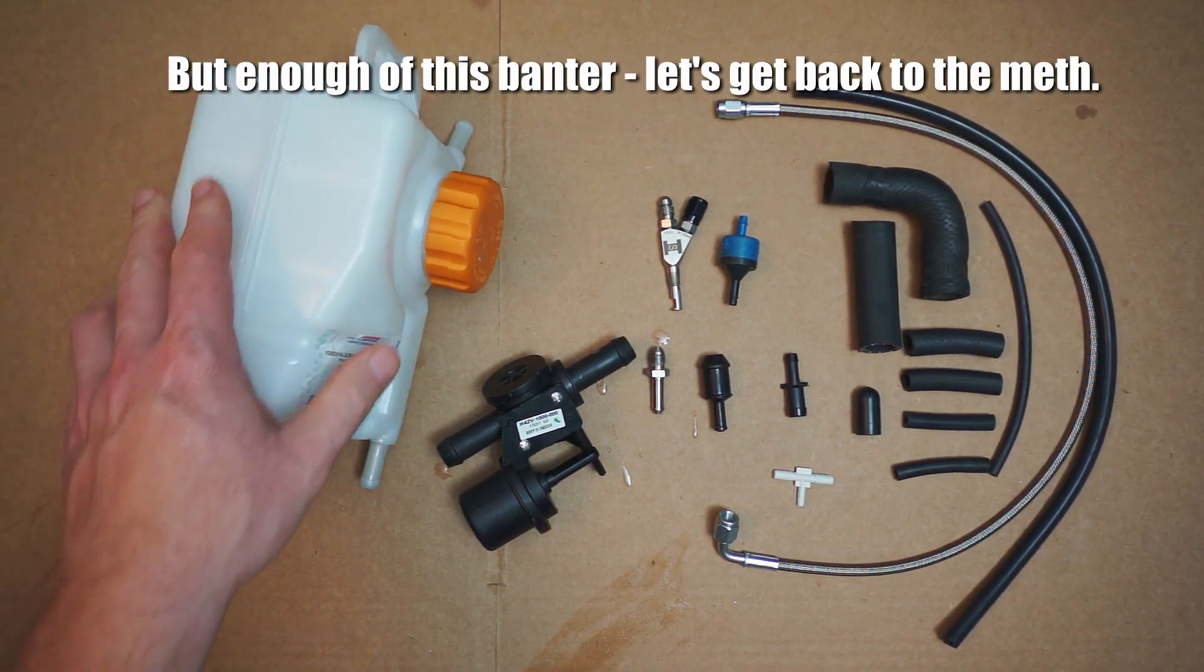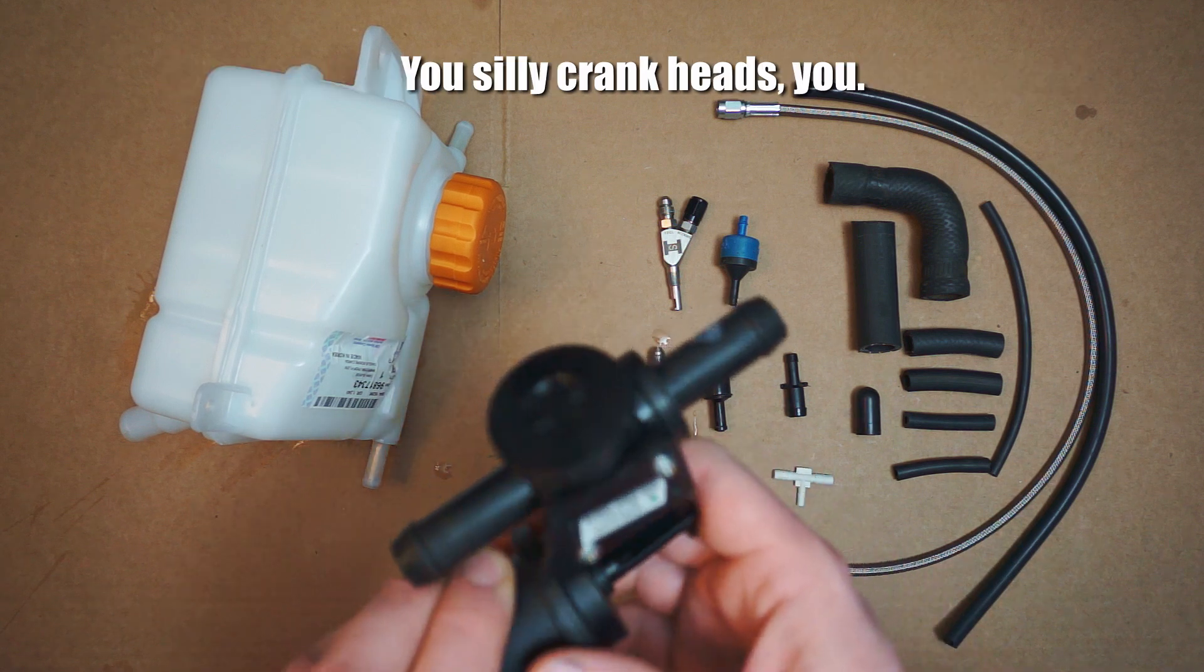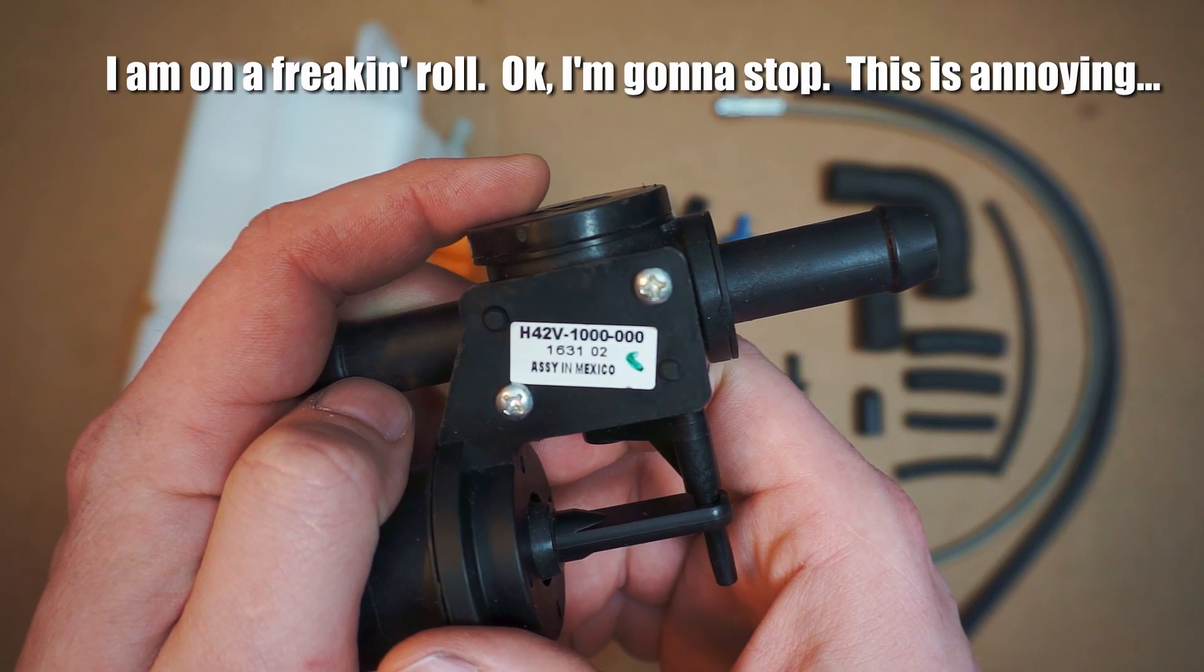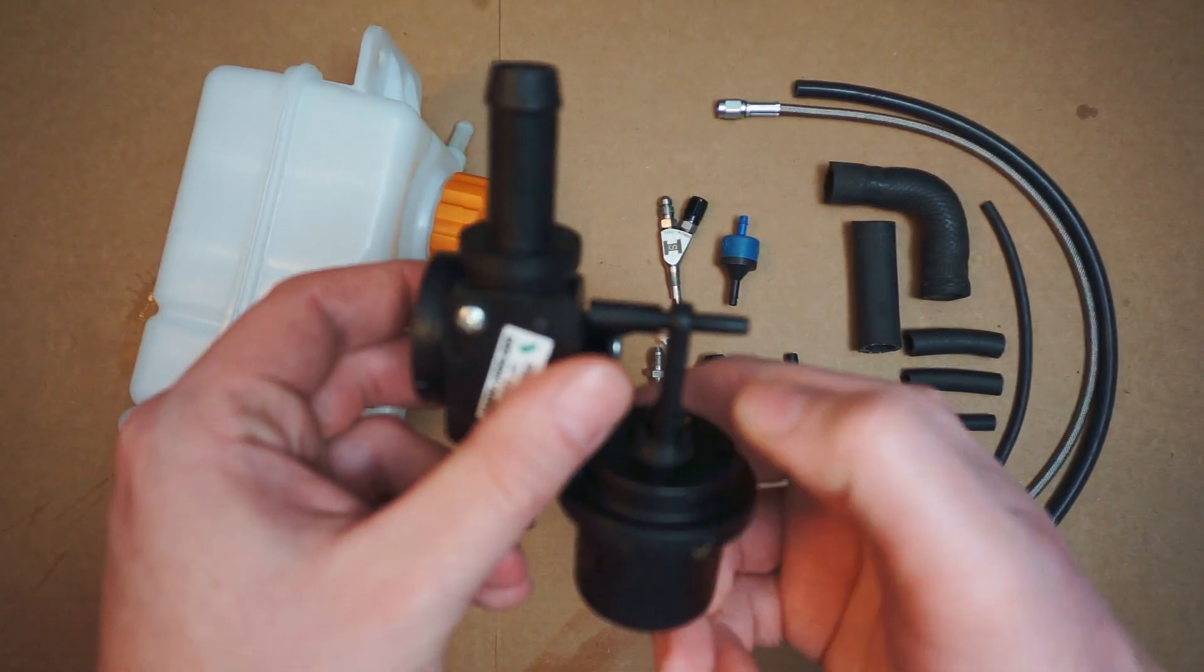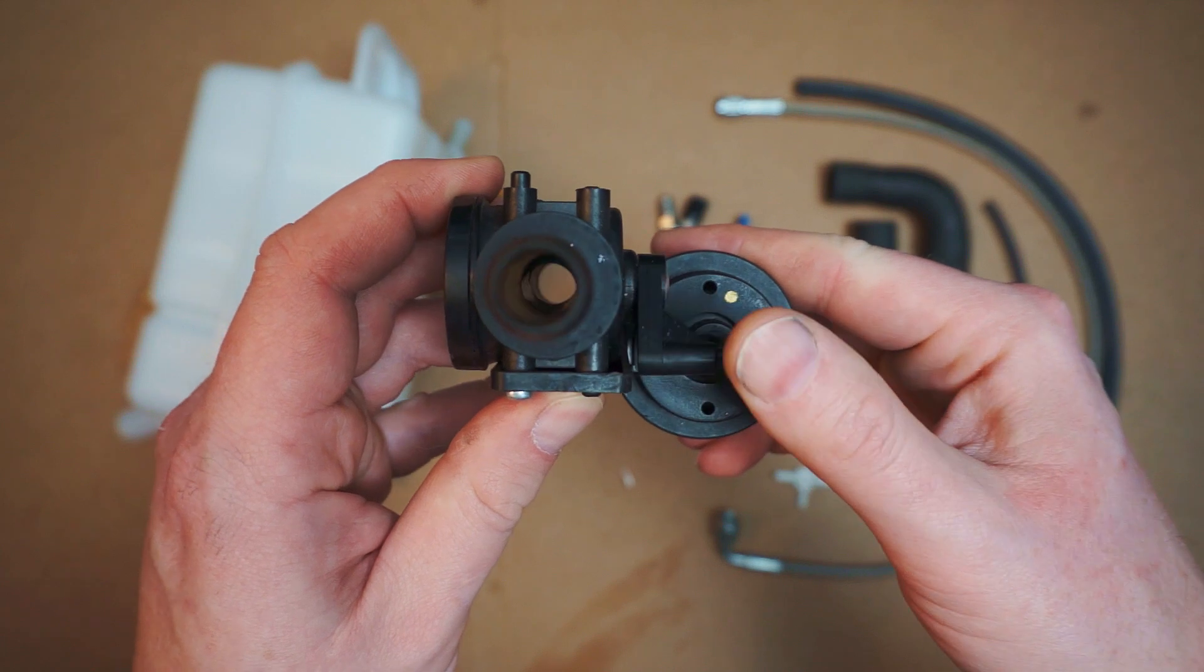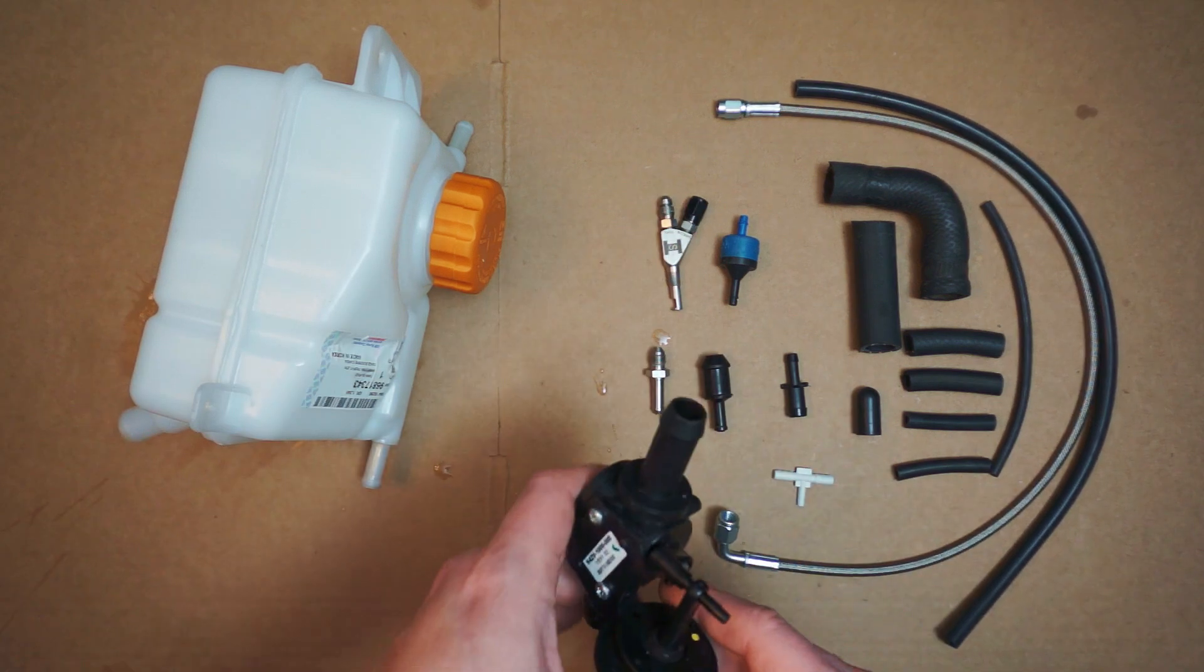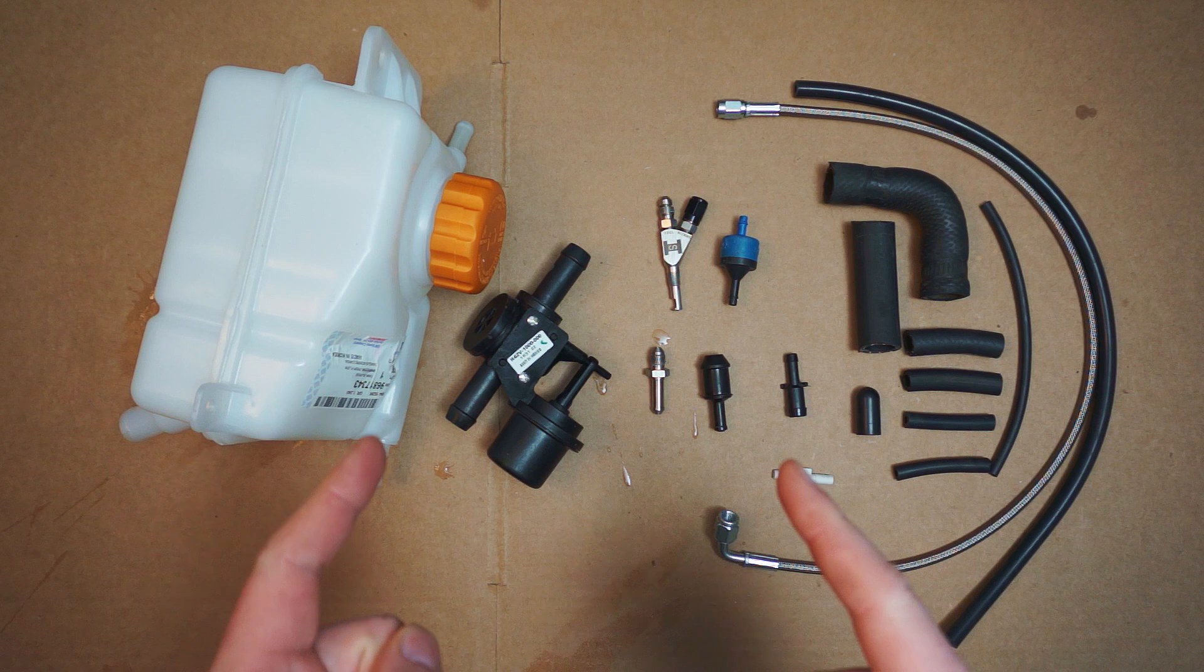The next most important thing is going to be this check valve. This is a Ford part, a heater bypass valve, and when vacuum is present here it just closes and opens. That prevents the engine from siphoning the meth out during high vacuum situations like cruising or idle because you definitely don't want that.